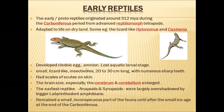This increase in brain size helped reptiles to successfully live on land. The earliest reptiles gave rise to primitive ones called cotylosaurs, having anapsida skulls. Later, from cotylosaurs, synapsida skulls also developed and synapsida reptiles came into existence. Even though these anapsids and synapsids were overshadowed by the labyrinthodont amphibians at that time — who were the dominant species on land due to their large size — reptiles remained a small, inconspicuous part of the total fauna until after the small ice age at the end of the Carboniferous.